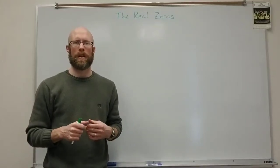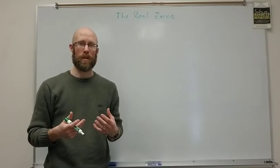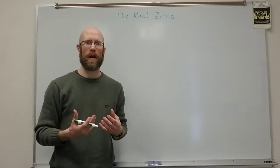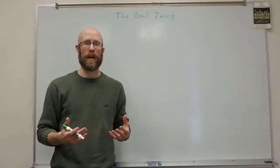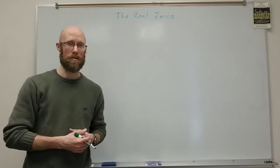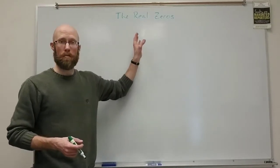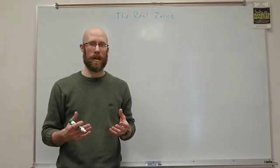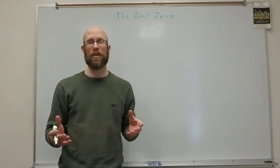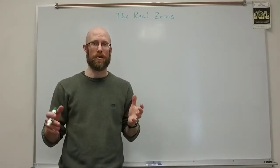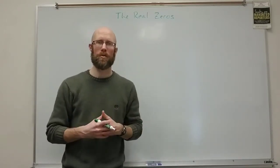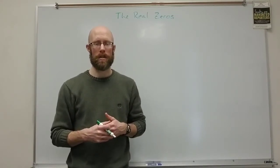The next thing we're going to study is the real zeros of a polynomial. We're going to look at some of the details of how you find them, how you determine what they are, how many there are, and some other interesting facts. Real zeros are very important because they determine things like the degree of the polynomial, the number of turning points, and the behavior of the polynomial between the tails. The x-intercepts and real zeros give us a lot of insight into the behavior of a polynomial.